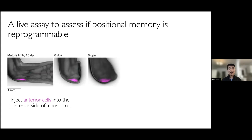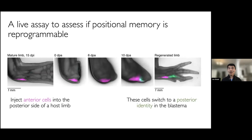We then amputated the limb in a way that the transplanted cells could contribute to the regenerating blastema, which you can see up to six days post-amputation. Very excitingly, from day 10, what we saw was the gradual appearance of green EGFP-positive cells in the blastema. EGFP suggests a posterior identity — these cells express HAND2. And just to remind you, only the transplanted cells carry the EGFP transgene in this assay, so the new posterior cells must have arisen from the anterior transplant. These green cells persisted throughout regeneration and survived into the regenerated limb.